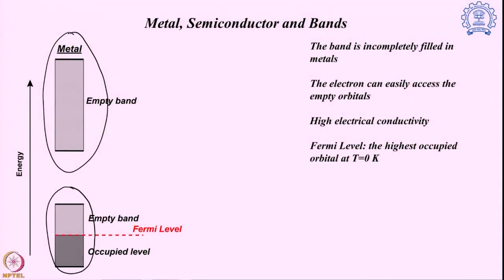Here I am showing you the band structure of a metal. In the metal, we already have very few electrons present because it likes to leave electrons very easily. What we find is two different bands — one lower energy band and one higher energy band. The metal has so many electrons that it cannot even fill up the lower energy band. The dark color shows how much is filled up and the light color shows the empty regions where no electron is present.